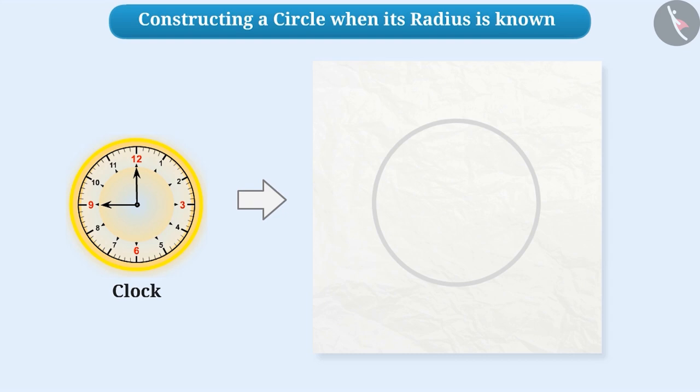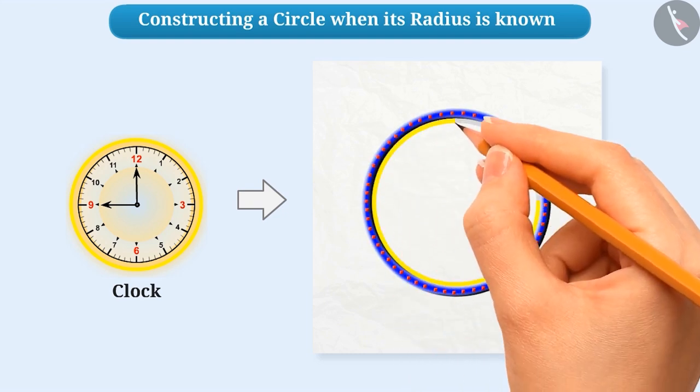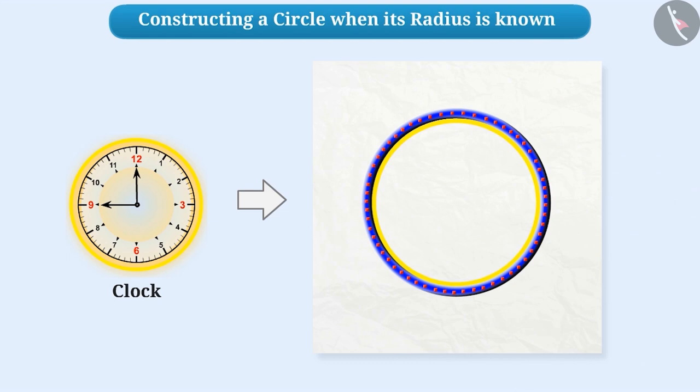Although we can easily construct a circle using some means such as a bangle, with this, we cannot construct a circle with the desired radius.